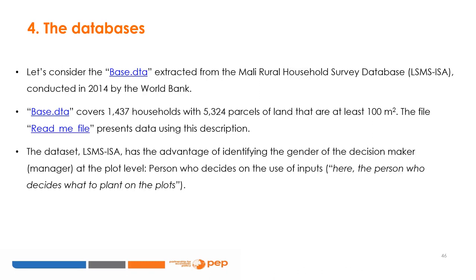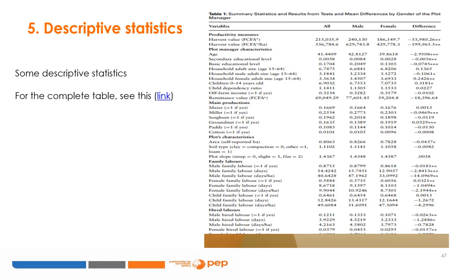The practical case we have developed here comes from the work of Singbo et al. 2020, examining the gender productivity gap among farm households in Mali. We consider base data extracted from the Mali Rural Household Survey Database — LSMS-ISA — conducted in 2014 by the World Bank. The base data covers 1,437 households with 5,324 parcels of land of at least 100 square meters. The LSMS-ISA dataset has the advantage of identifying the gender of the decision maker or manager at the plot level — the person who decides on the use of inputs and what to plant. Descriptive statistics are extracted from Singbo et al. 2020; please see the link for the complete table.